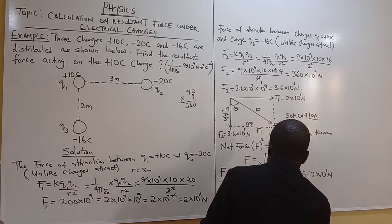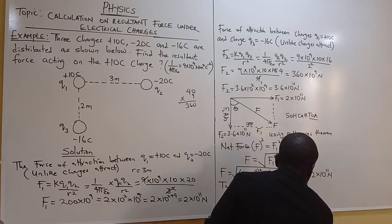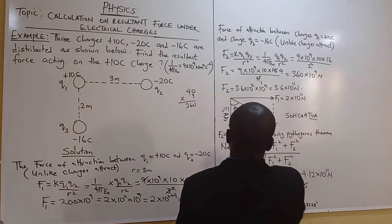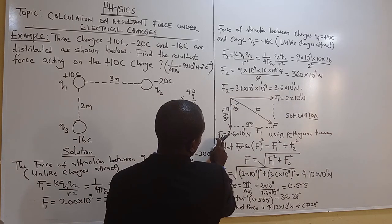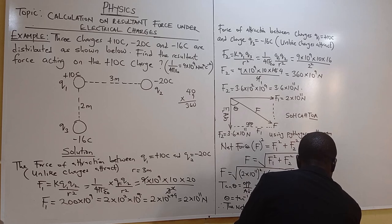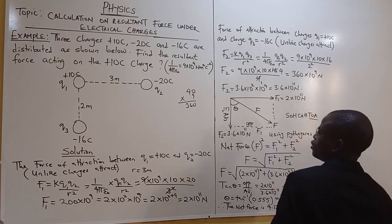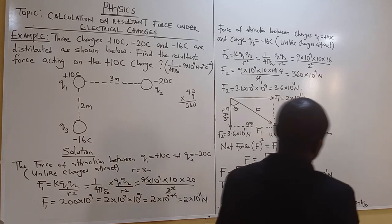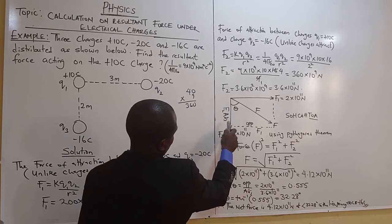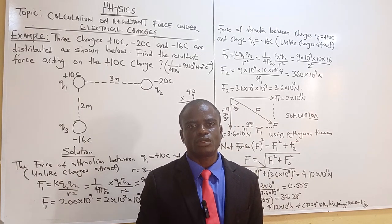Therefore theta equals tan inverse of 0.555, giving 32.28 degrees. The net force is 4.12 times 10 to the power 11 Newtons at an angle of 32.28 degrees towards F2 — that is, along the line joining plus 10 coulombs and minus 16 coulombs. This is the end of our class. Please subscribe to my channel for access to the latest videos. Have a wonderful day.